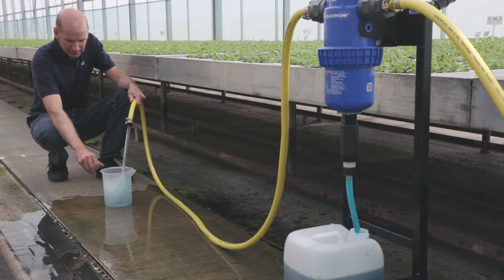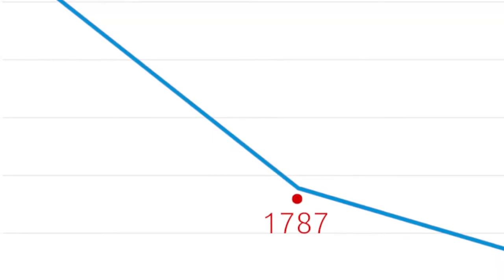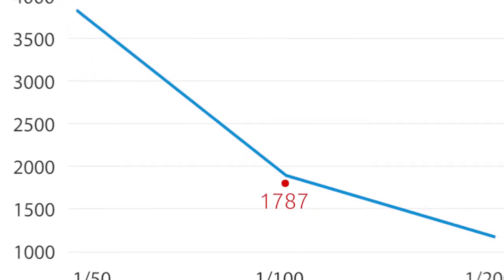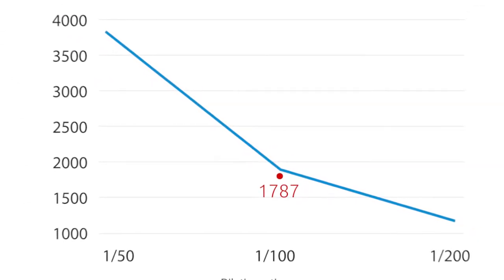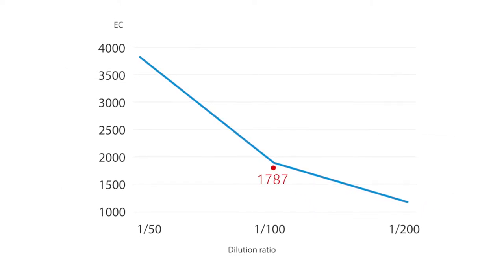So when we ran the proportional diluter on the nursery we got a value of one thousand seven hundred and eighty seven. Whereas the original calibration point was one thousand eight hundred and sixty six. You could increase the concentration slightly by altering the throat on the actual proportional diluter. Most of the diluters tend to actually vary more at low concentrations than they do at high concentrations. These two points are fairly close and probably indicate that the diluter we've used is running accurately.